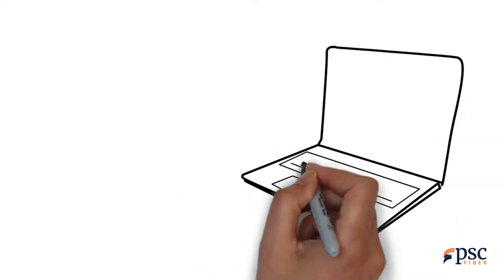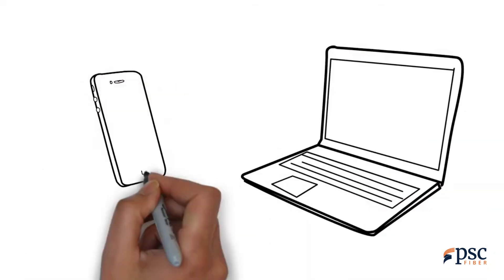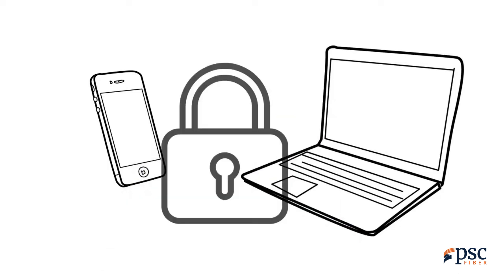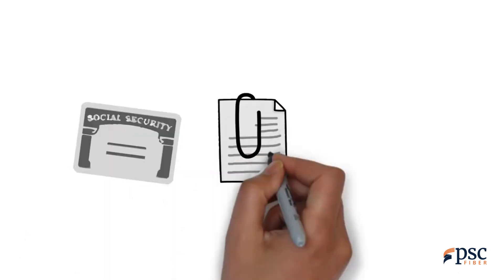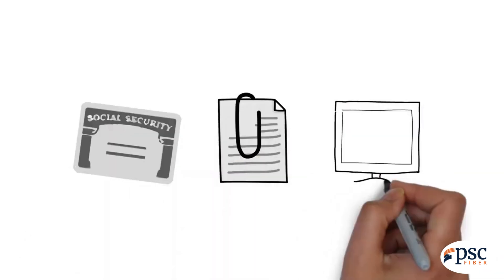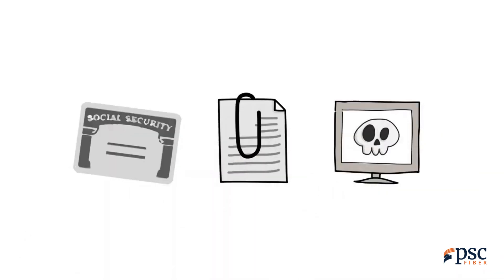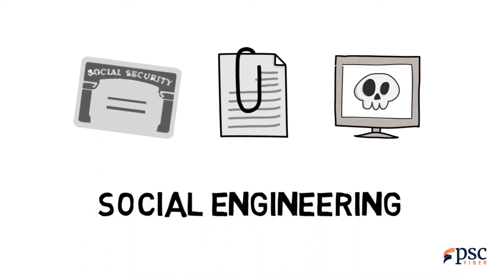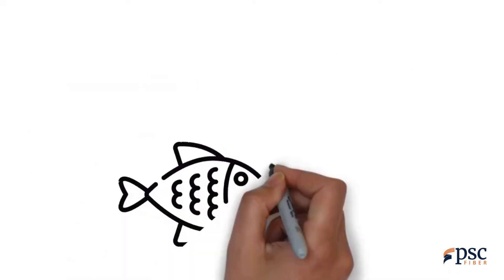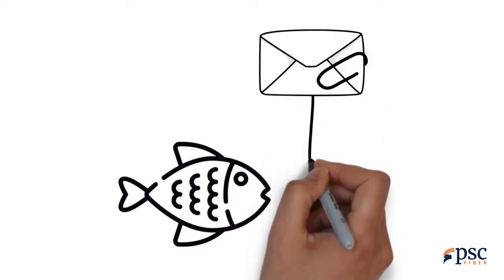In today's connected world, it can be easier for hackers to trick you than it is for them to break into your computer or mobile device. When a hacker uses trickery to get someone to reveal personal information, download a malicious file, or visit a dangerous website, it's called social engineering. And the most common form of social engineering, called phishing, occurs through email.